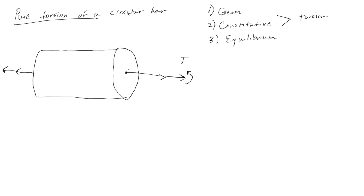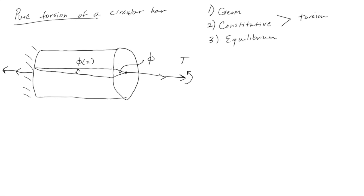This torsional load is going to act through the centroid of the bar. We're going to assume it is fixed on one end, and we're applying a torsion. As you would expect, if you inscribed a line, after the application of the load, there would be the development of an angle, where this is going to be called phi of x. The total amount of twist we're going to call phi, where this is the total angle of twist.